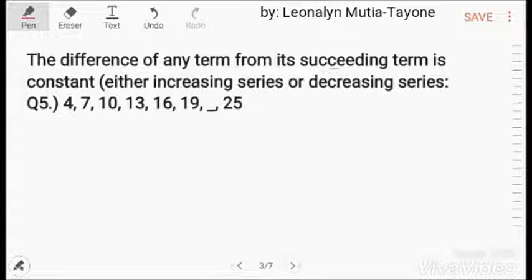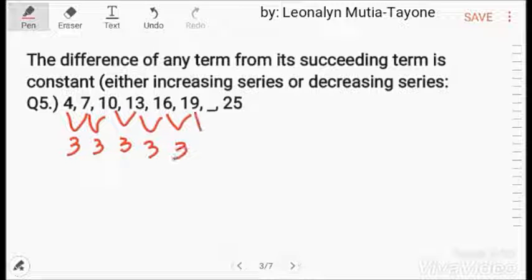The difference of any term from its succeeding term is constant, either increasing series or decreasing series. Here the difference is 3. So, 10 plus 3 and 3. So, 19 plus 3, that is 22. The answer here is 22.